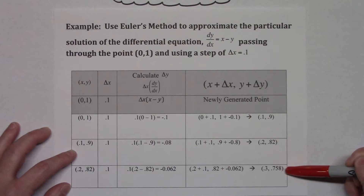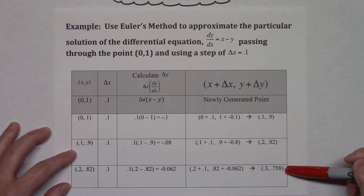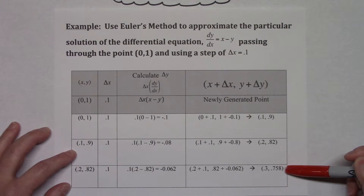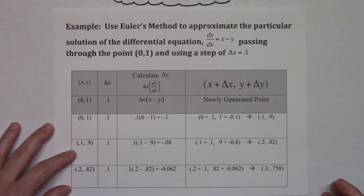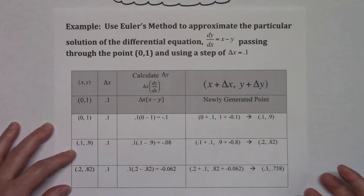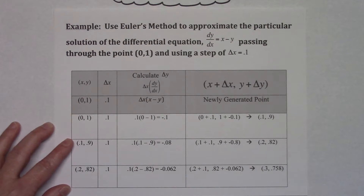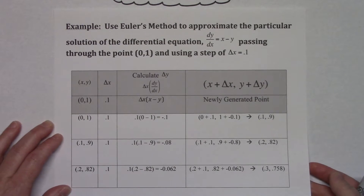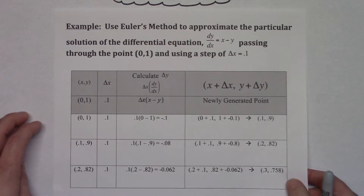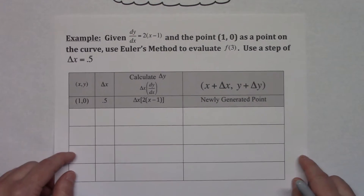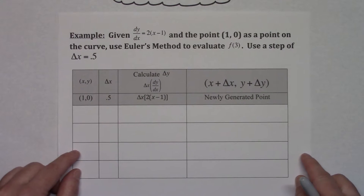These points right here would be the points on the approximation, creating all those little line segments we saw in the first picture. That's basically how you use Euler's method. Now I'm going to go through another example with a little bit different scenario.